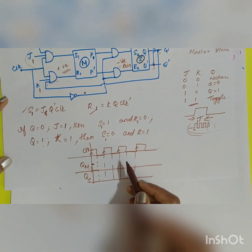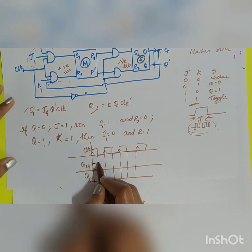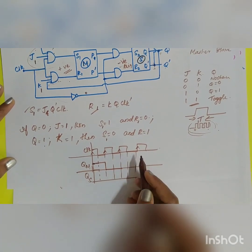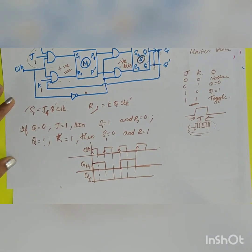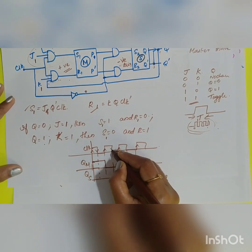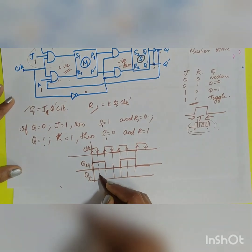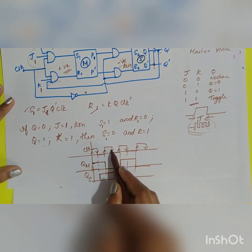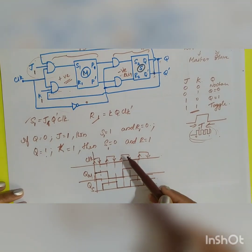During the rising edge, the master output goes high and holds the signal until the next rising edge, then goes back. The slave operates only during the falling edge — its output goes high at the falling edge and holds the value until the next falling edge. This is the timing diagram of the master-slave JK flip-flop.